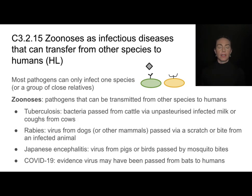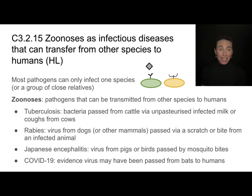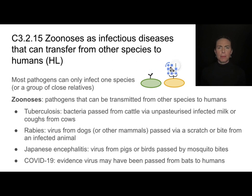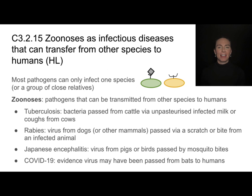Most pathogens can only infect either one species or a group of closely related species. That's because in order for something to infect a host, its antigens have to fit with the receptors on the host cell. Unrelated species are unlikely to have receptors that fit with that antigen, so infection isn't possible. These are mostly closely related or identical species that get infected by the same pathogen.